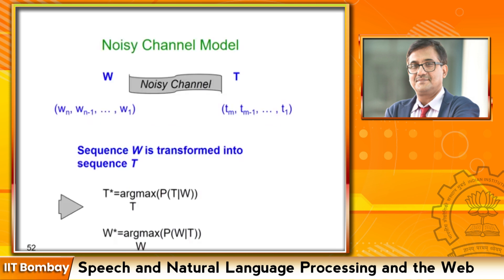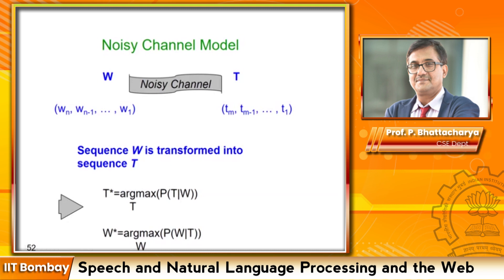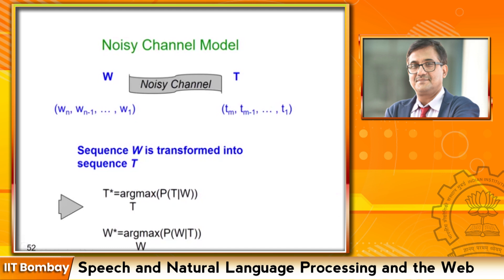For modeling, we again appeal to the noisy channel framework: there is an input sequence W and output sequence T, and we are interested in T* with the highest probability of T given W. This is the same framework used for POS tagging. For chunking, the only difference is that the number of tags is just two: B and I — a much easier problem. We will not transform it into a generative model using Bayes' theorem because hidden Markov models are not very naturally suited for dealing with features, though feature-enhanced HMMs exist in speech.